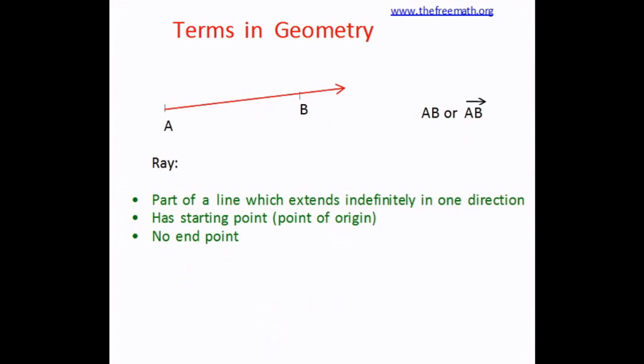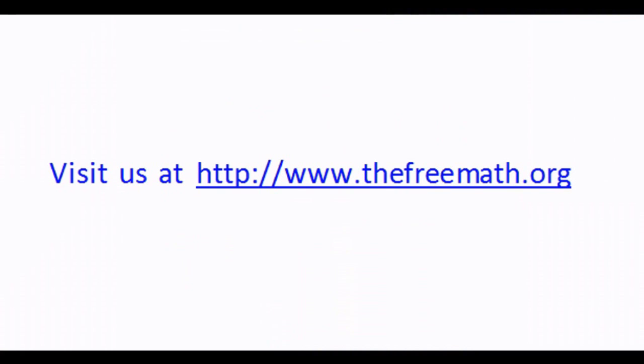So this ray you can see is named as AB and you can see a little arrow above AB that shows that it is a ray. Now where have you seen examples of rays? Yes, sun rays is a good example of ray because you know that it has a starting point and you don't know where it ends.